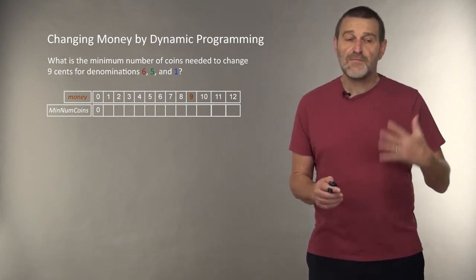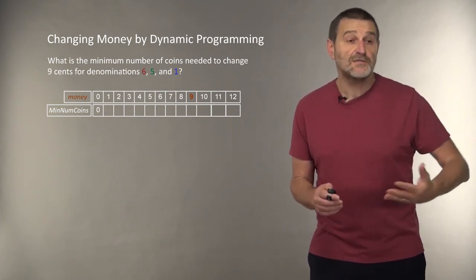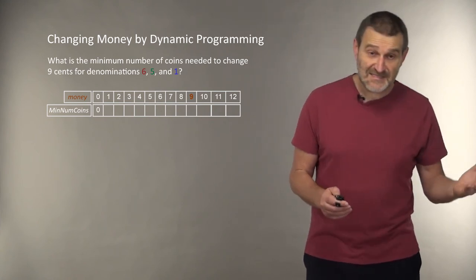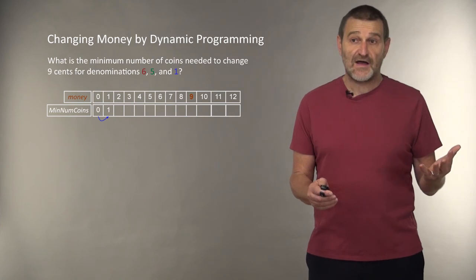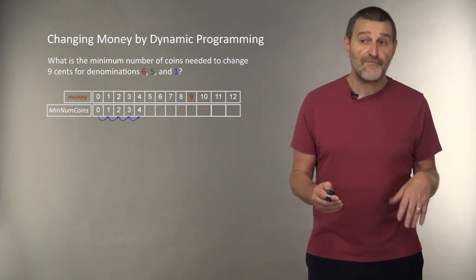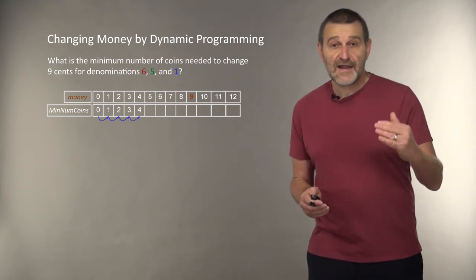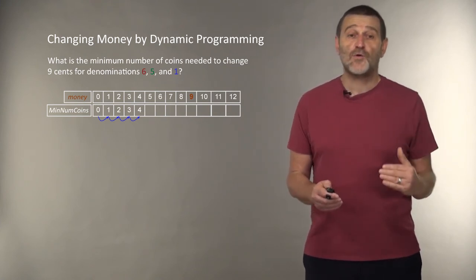For example, what is the minimum number of coins to change 0 cents? Of course, it is 0. What is the minimum number of coins to change 1 cent? Of course, it is 1. 2, it is 2. 3, it is 3. And 4, it is 4. And now we come to changing 5 coins.